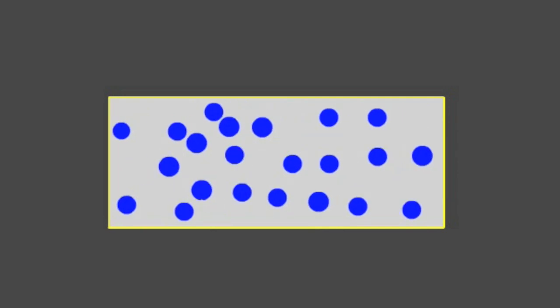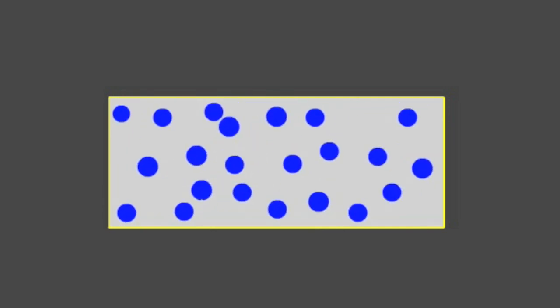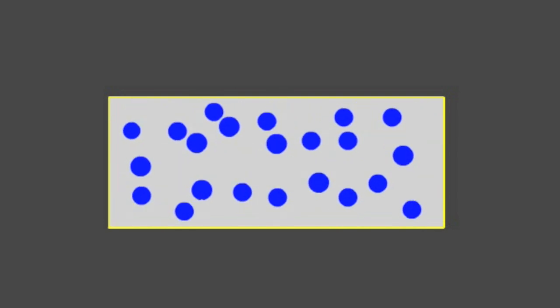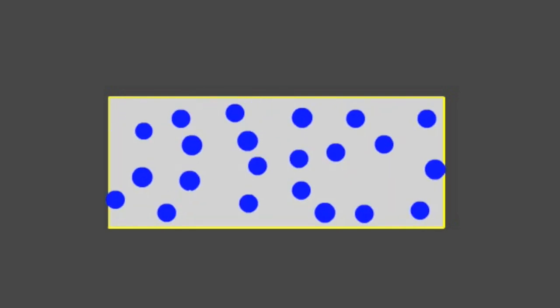In metals there are very large numbers of electrons which move easily. Due to the thermal energy of the metal, they dance and vibrate rapidly in all directions.